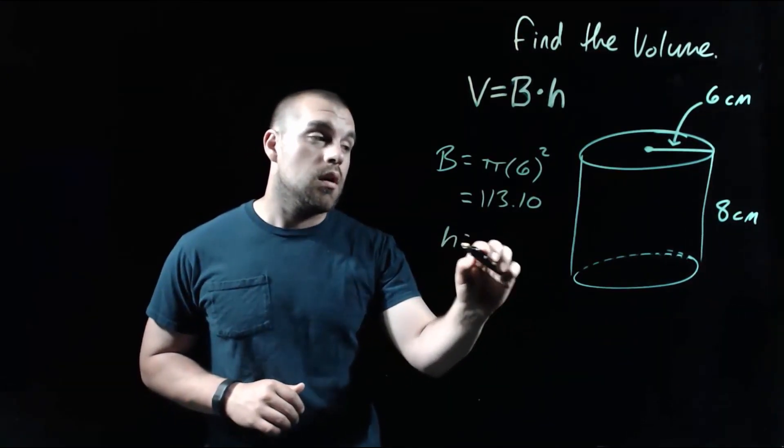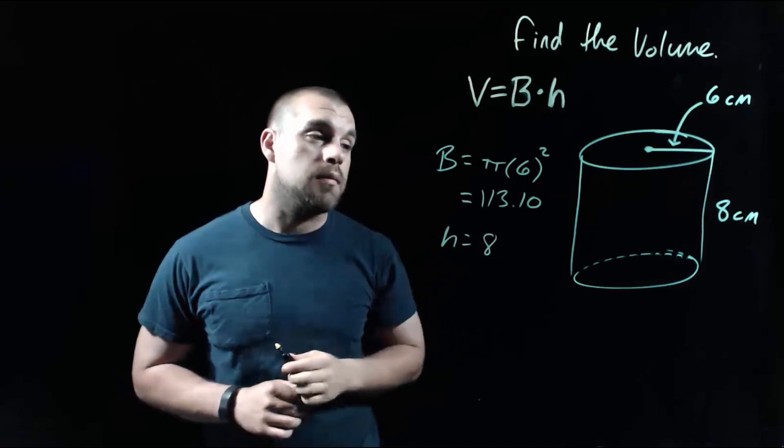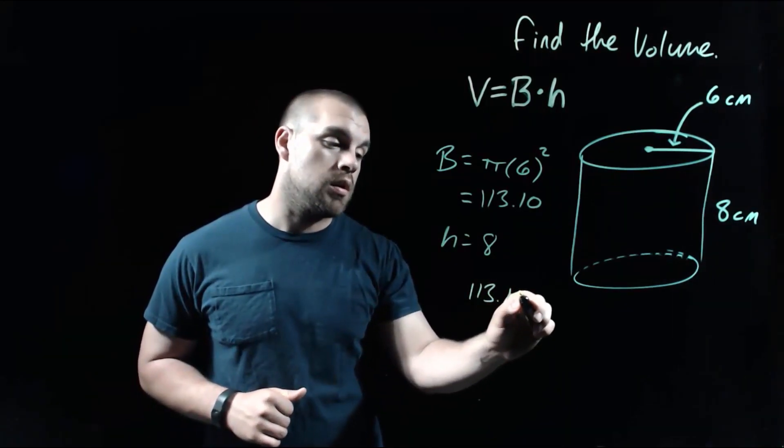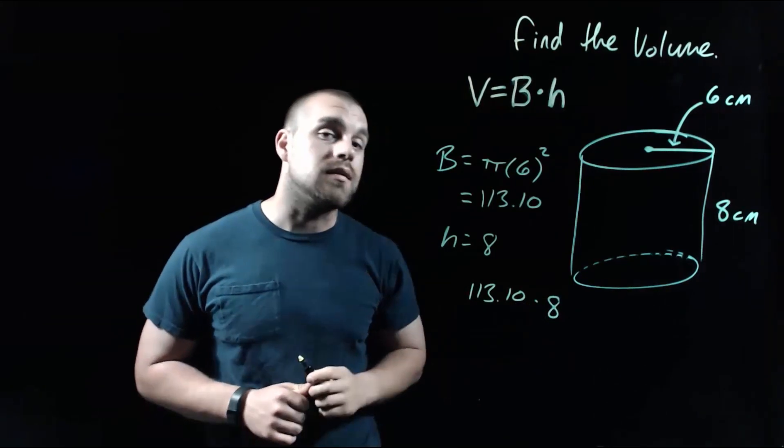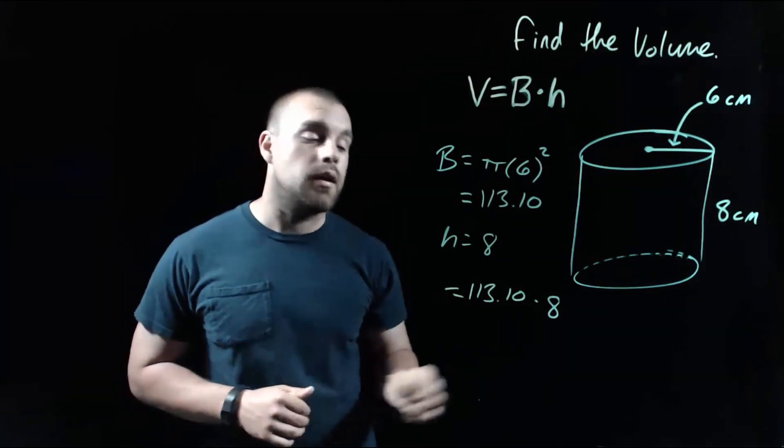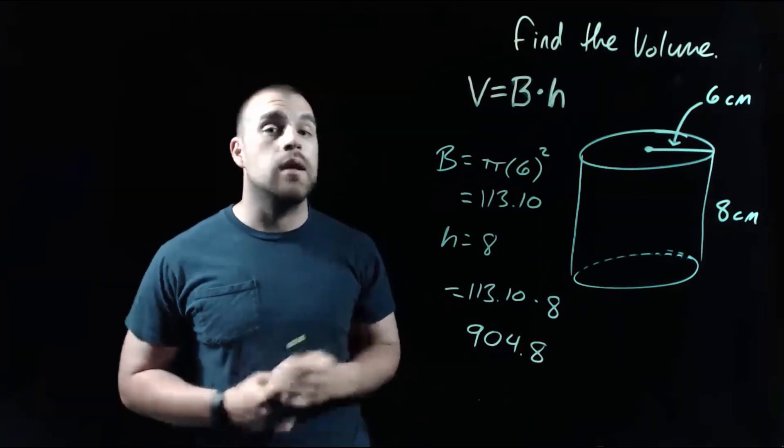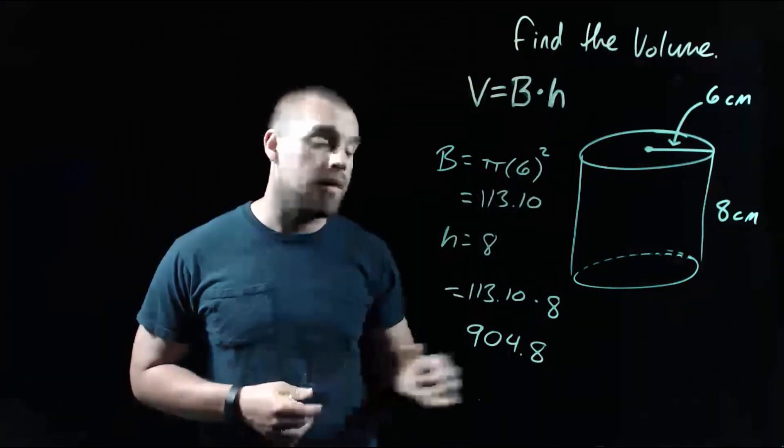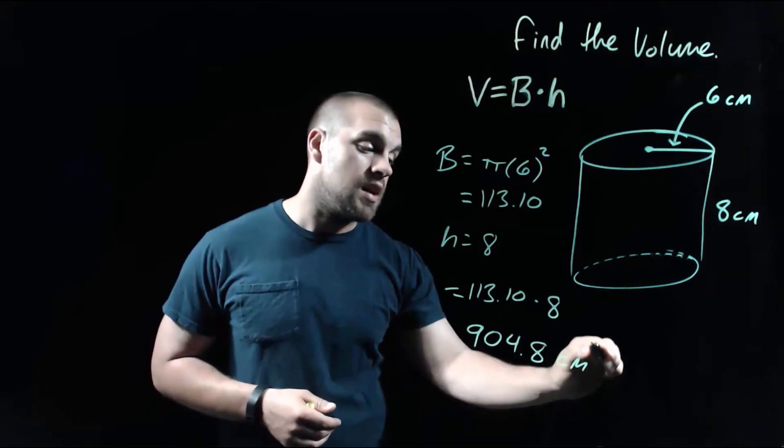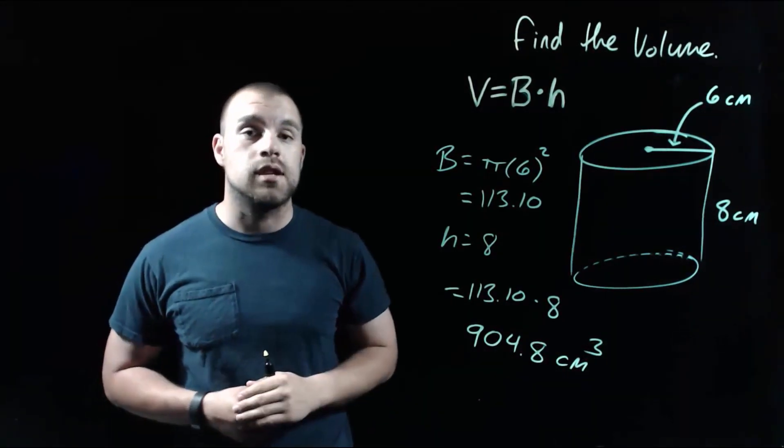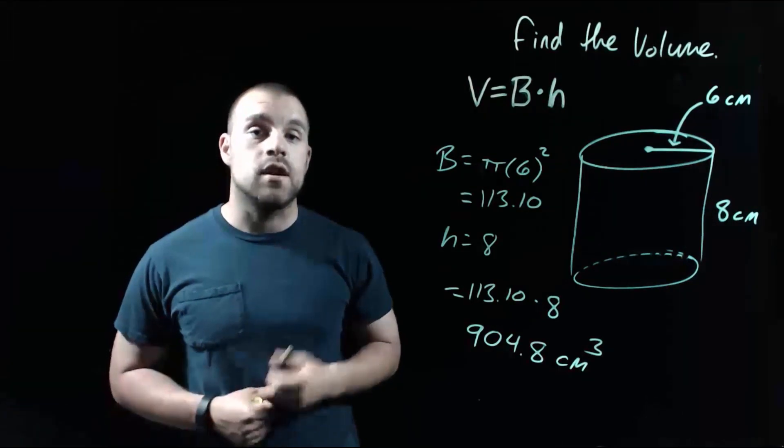And then for our height, we've got that eight centimeter length. So now if we multiply those things together, 113.10 times eight, I'm going to type that into my calculator. We end up getting about 904.8. And then we need to throw a label on this. Our measurements were given to us in centimeters, so this is centimeters cubed. So 904.8 centimeters cubed. That's going to be it for this video. Thanks for watching.